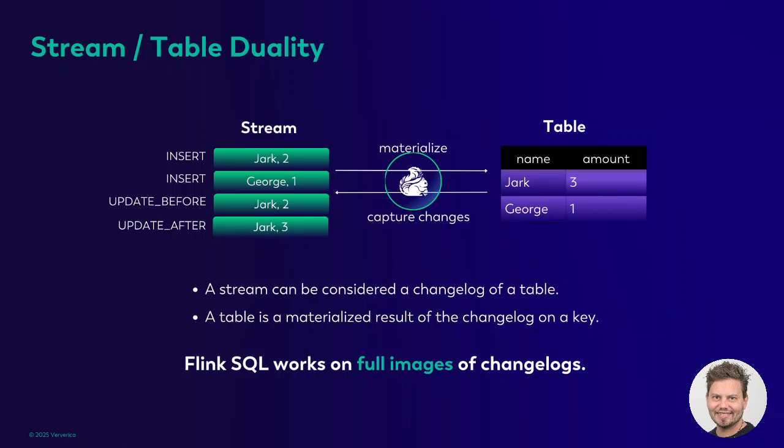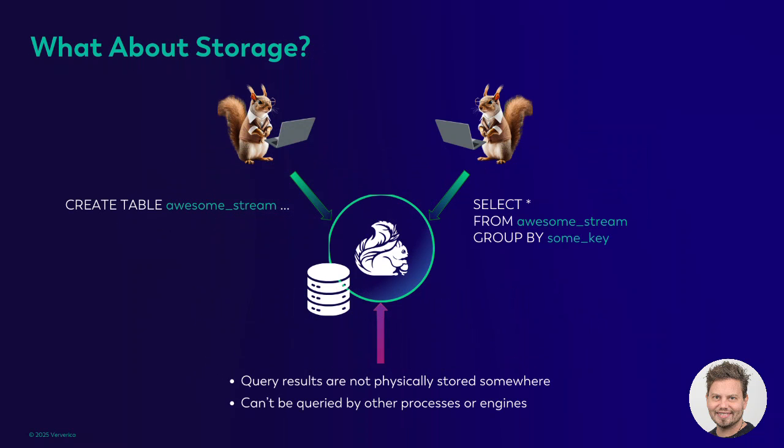Moreover, Flink has the concept of stream and table duality. A stream can be considered a changelog of a table — it keeps track of all the changes that take place and can be replayed to reconstruct a table to its later state. A table, on the other hand, is a materialized result of the changelog on a key. With Flink SQL and stream-table duality, Flink has all the properties that resemble a database: tables, a SQL layer, and a changelog similar to a database write-ahead log that keeps track of all changes.